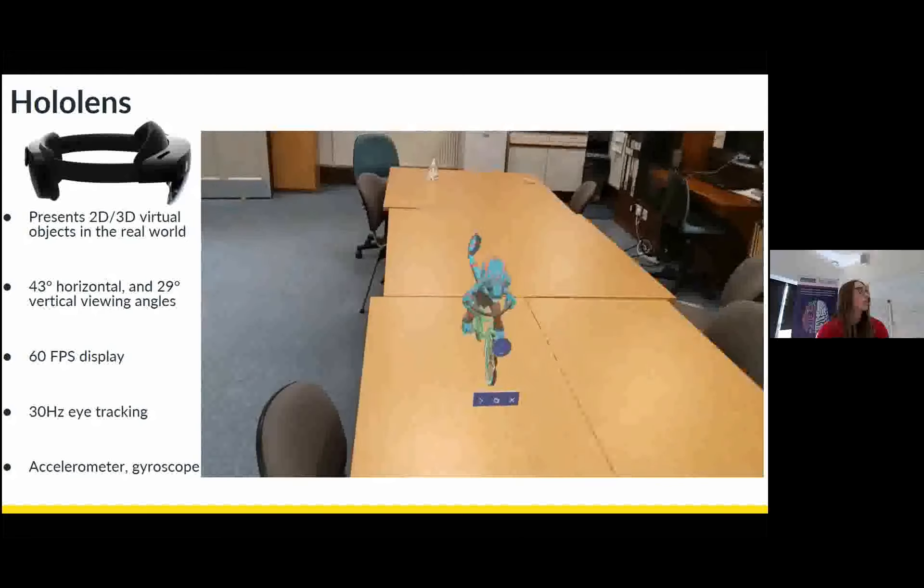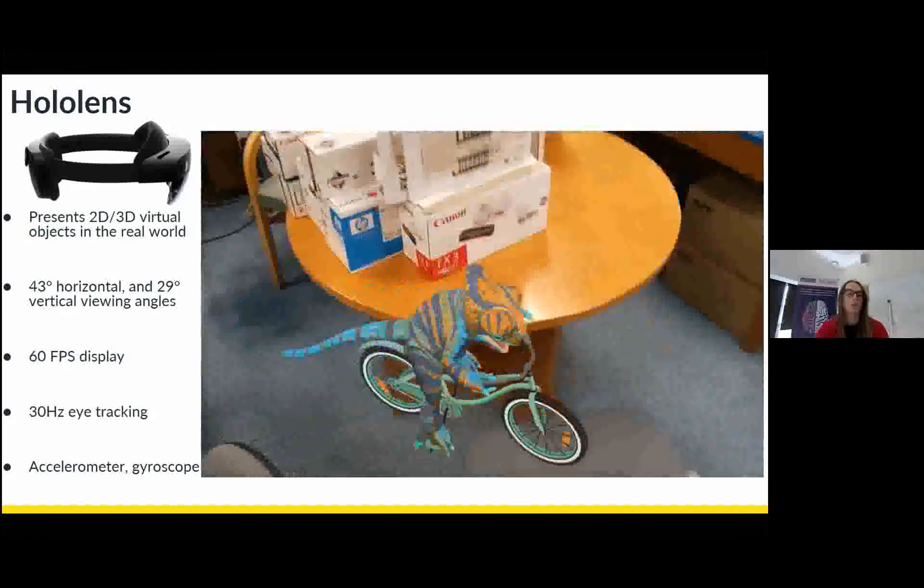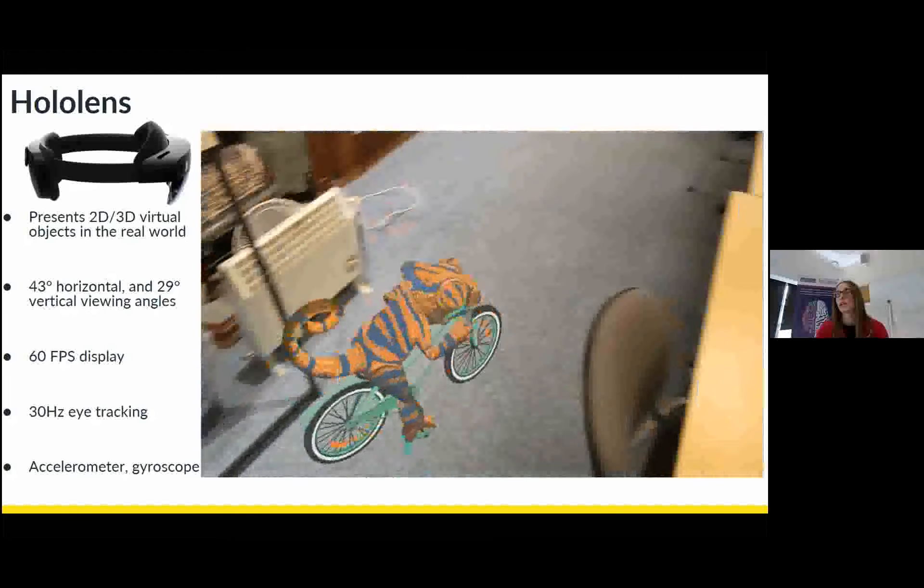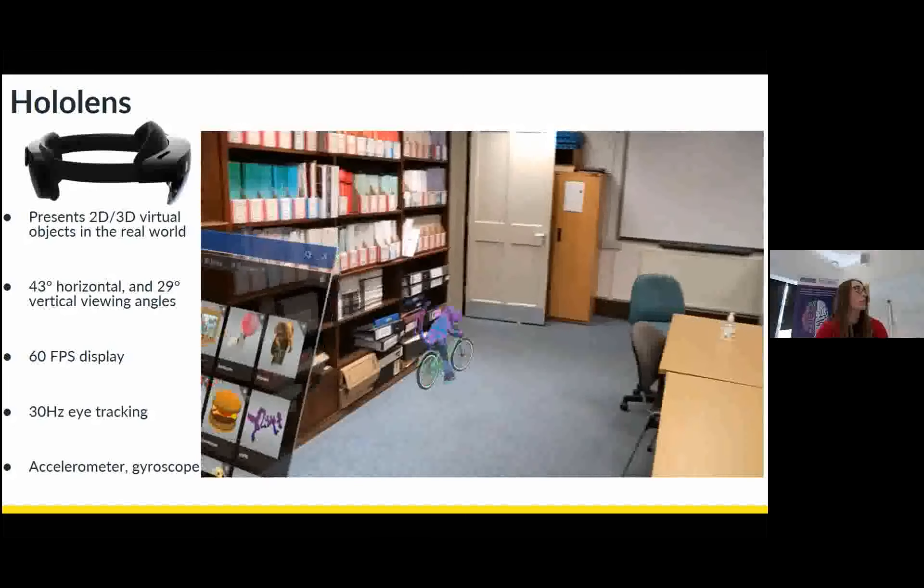And it presents objects in up to 60 frames a second. And as I follow this chameleon around with my eyes, it'll track my eye movements with 30 hertz eye tracking. And I also keep track of my head position and orientation using accelerometers and a gyroscope.